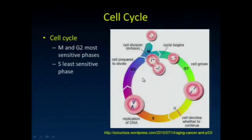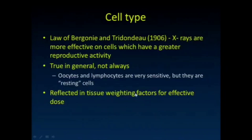This diagram shows those phases of the cell cycle where cells are preparing to divide and undergoing division — those are very sensitive — and this more quiescent S phase. It is generally true that cells with greater reproductive activity are more sensitive, though it's not always true.